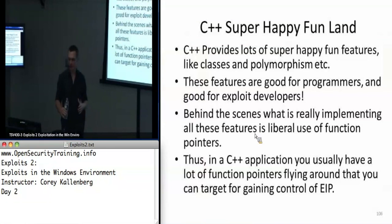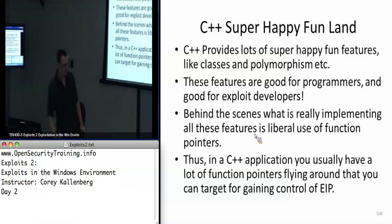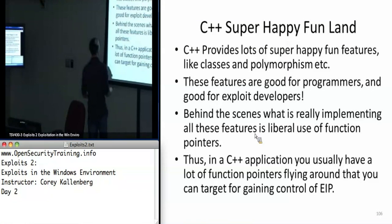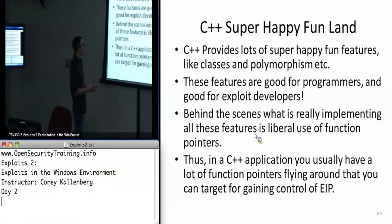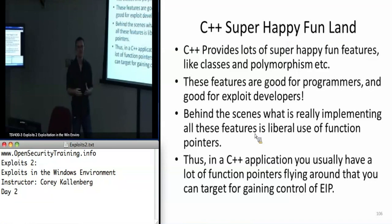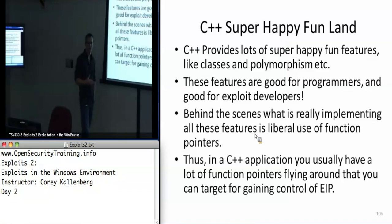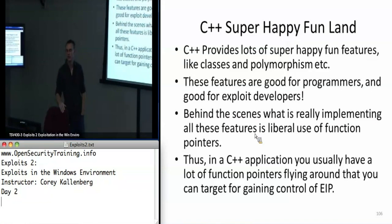Before we get started with the mitigations, there are a couple other vectors of attack that Windows provides. Most applications in user land are written in C++, and C++ provides a lot more targets than standard C for buffer overflows because C++ uses a crazy amount of function pointers to accomplish its classes, inheritance, and polymorphism. Those are just more things that provide an opportunity to overwrite and gain control of EIP.